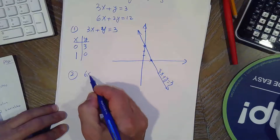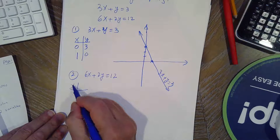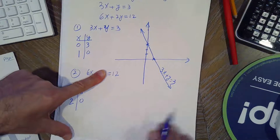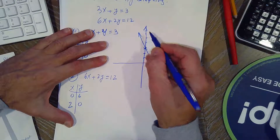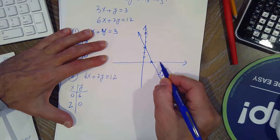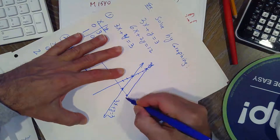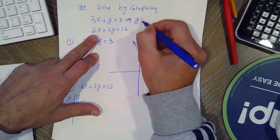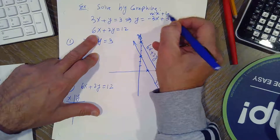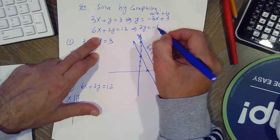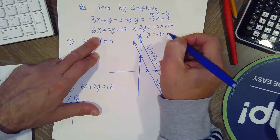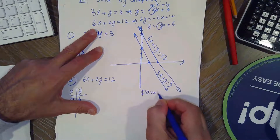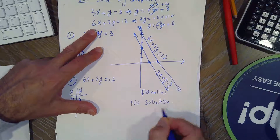For the second line, 6x plus 2y equals 12: if x is 0 then y is 6; if y is 0 then x is 2. So we have (0,6) and (2,0). The two lines appear parallel. We can confirm this by finding the slope — the first line has slope negative 3, and the second line gives y equals negative 3x plus 6, same slope but different y-intercept. So they are parallel, no solution, system is inconsistent.